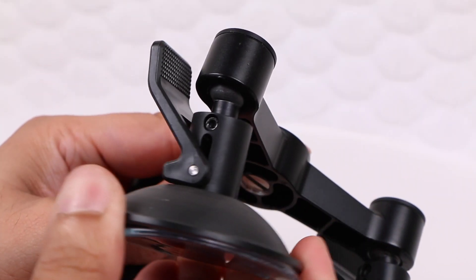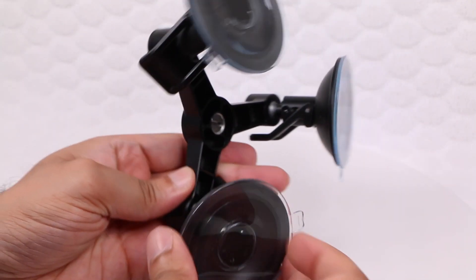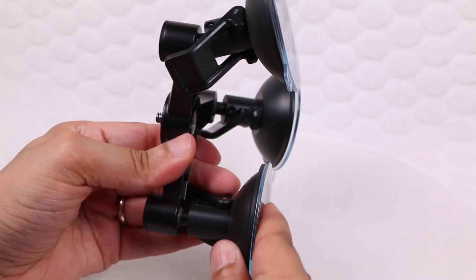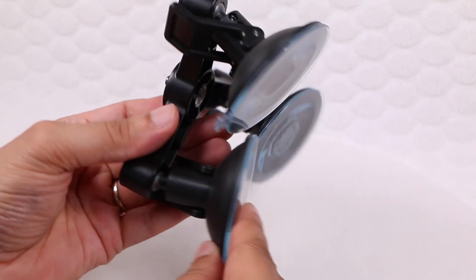Each cup attaches to the mount with a ball joint design, meaning the cups can be moved around and the entire mount can attach to surfaces that are not entirely straight, such as slightly curved body panels found on most vehicles.